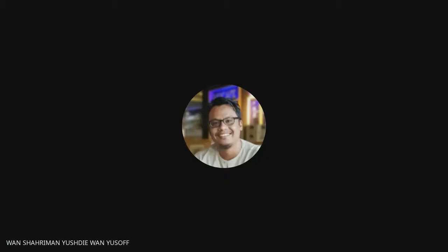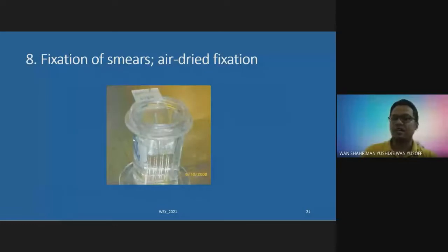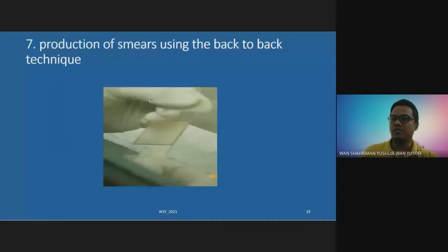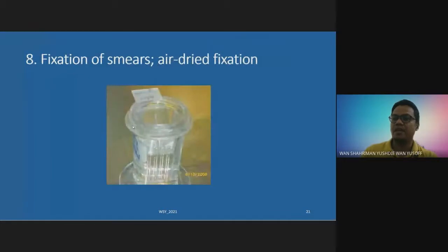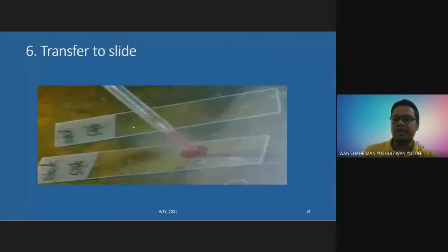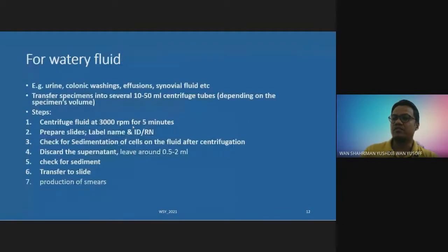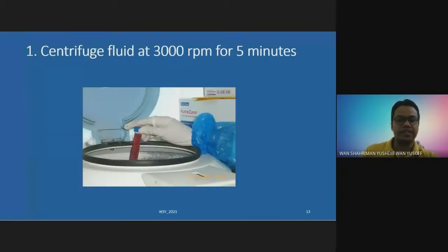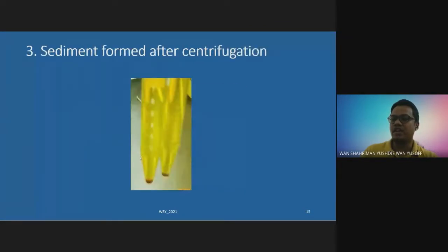To summarize smear preparation: first, direct smear for very small amounts of fluid (e.g., nipple discharge) — drop the fluid directly onto the slide and fix. Second, for larger volumes, separate into tubes, centrifuge, and collect the sediment. For non-gynae, some specimens such as sputum and urine only need wet fixation, while most others — peritoneal fluid, CSF, and other fluids — require both wet fixation and air-dry fixation.